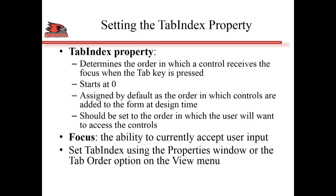And that's not originally designed automatically. The programmer has to specify the index of each control on the form which has some sort of input, so that the index basically selects which text box or button to select when you hit Tab from any one place. So the tab index property basically determines the order in which the control receives focus — which goes into primary mode, wherever you put your input, when the Tab key is pressed.